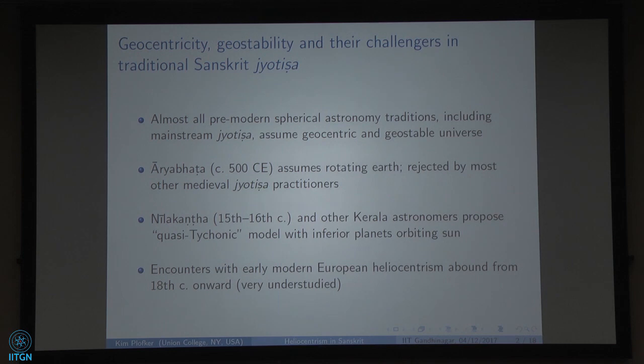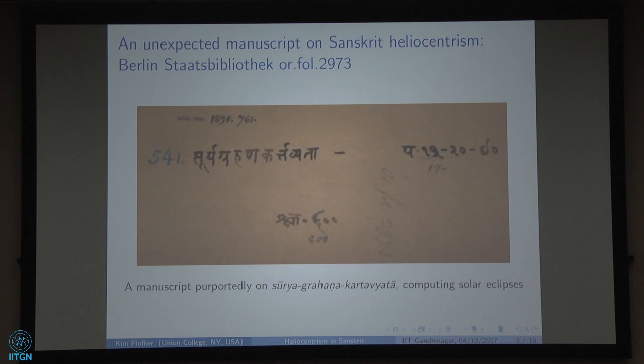All areas of Sanskrit mathematical astronomy are unfortunately understudied, and this is perhaps one of the most understudied of them. We're going to try to redress that a little bit in the short time today by looking at a particular manuscript that I encountered by accident. I am not the first person to have mentioned this manuscript, but it was new to me when I came across it working at Berlin a few years ago, looking for manuscripts relating to astronomy in the Staatsbibliothek or National Library there.